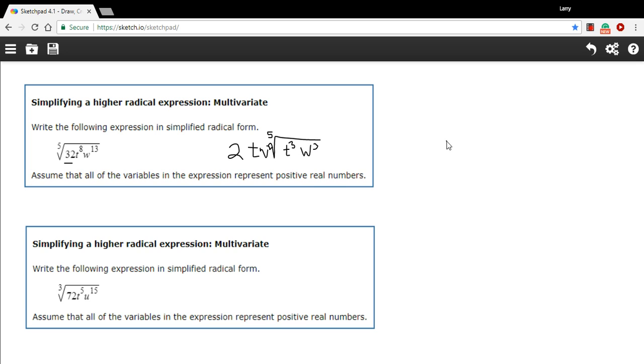So I wrote that in a way that's kind of hard to see. Let me rewrite that. So on the outside, I ended up with 2T W to the 2nd times the fifth root of T to the 3rd W to the 3rd.